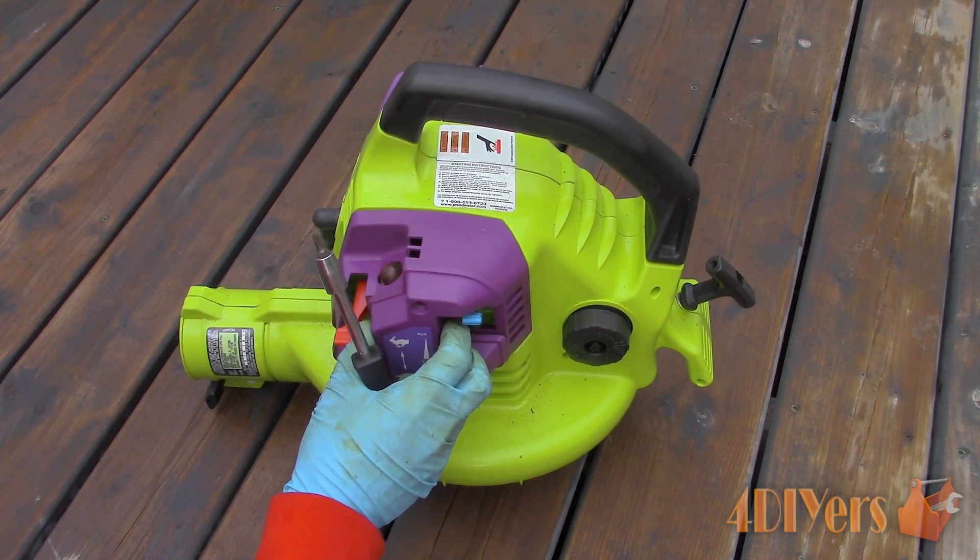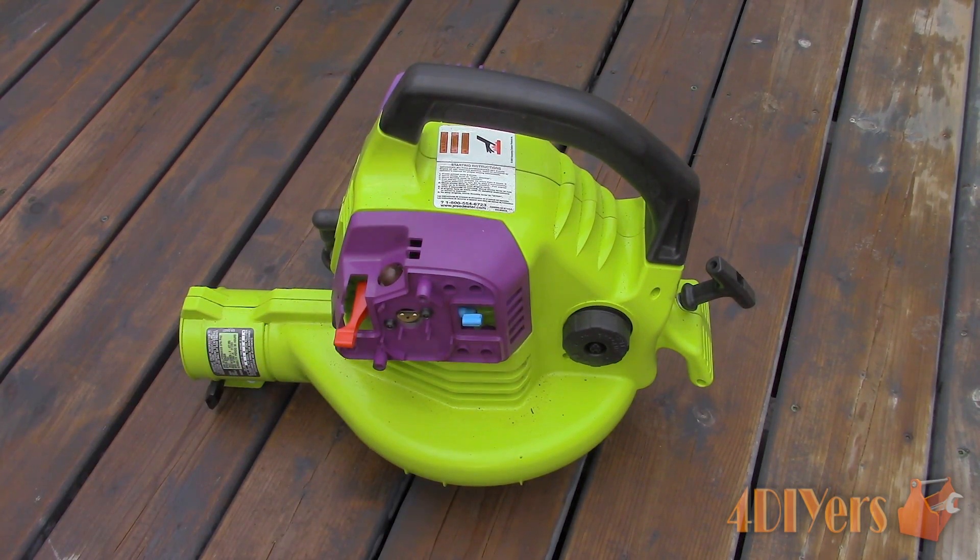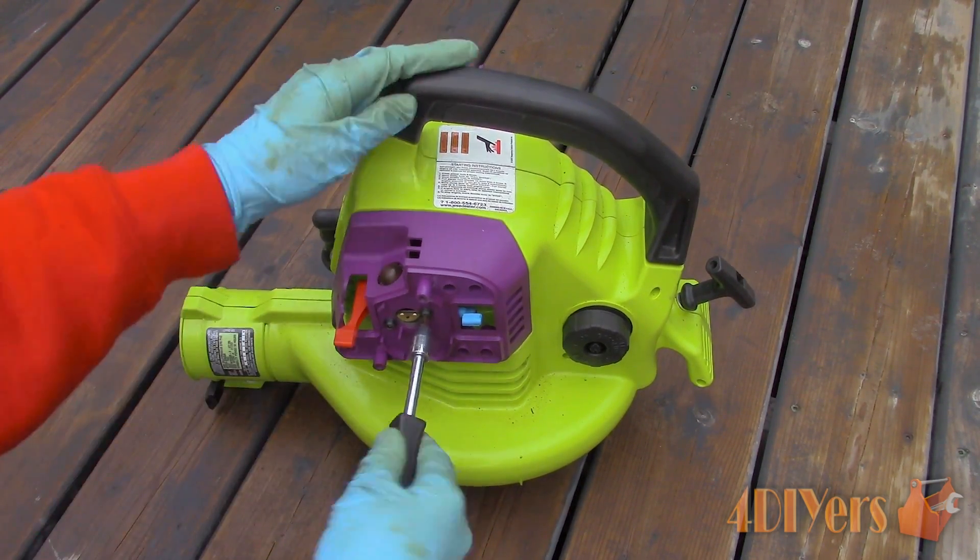First start by removing the air filter cover. On this model it has two T25 Torx screws which need to be removed. Then the filter cap and filter pop straight off.